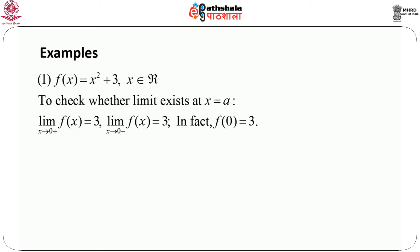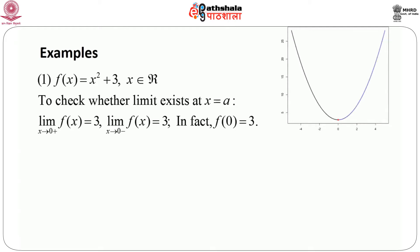So first, the right hand limit and left hand limit are equal, which implies the limit exists. And in this particular example, we see that this limit — which is 3 when x goes to 0 — is equal to the value of the function at x = 0. From the graph, it is clear that the function is really smooth. The blue line shows the function coming from the right side approaching the value 3 (denoted by the red dot), and the black curve gives the movement from the negative side towards 0. The red dot gives the value of the function at x = 0, which is indeed 3.